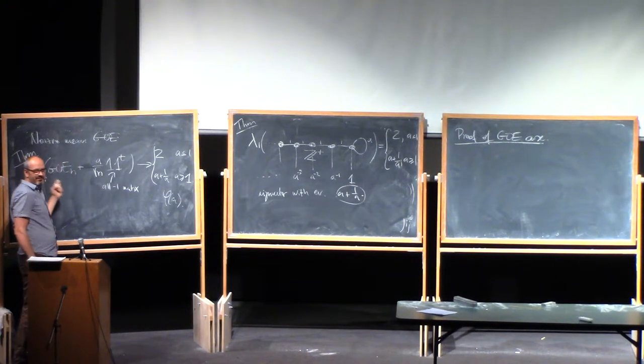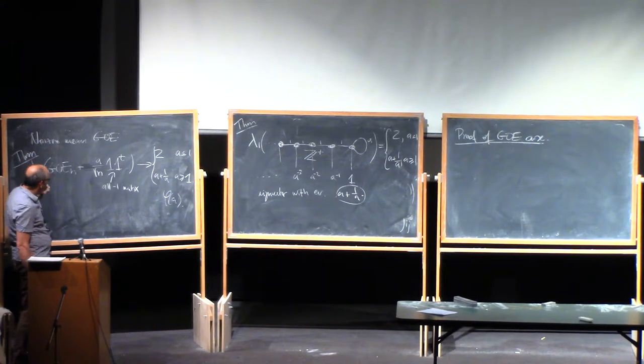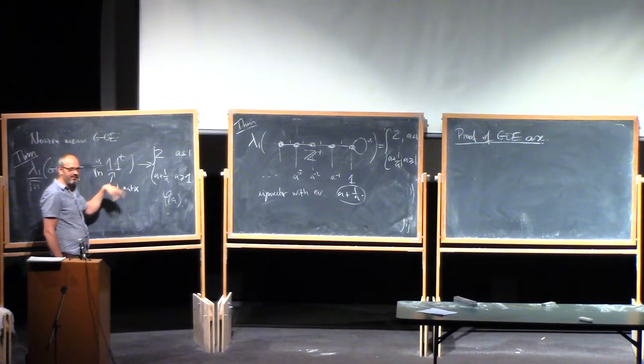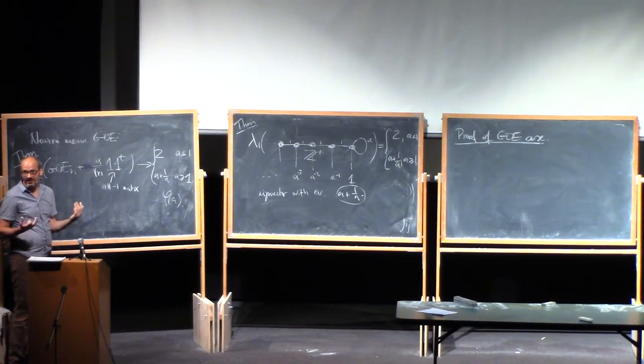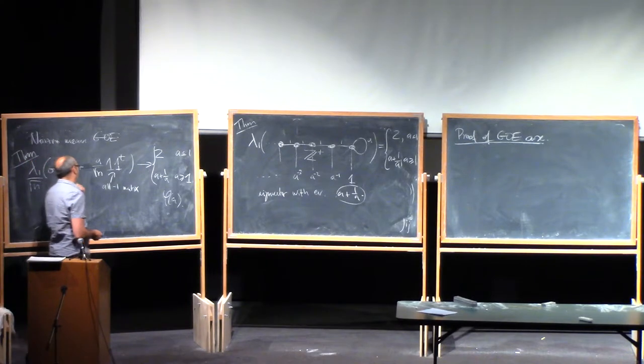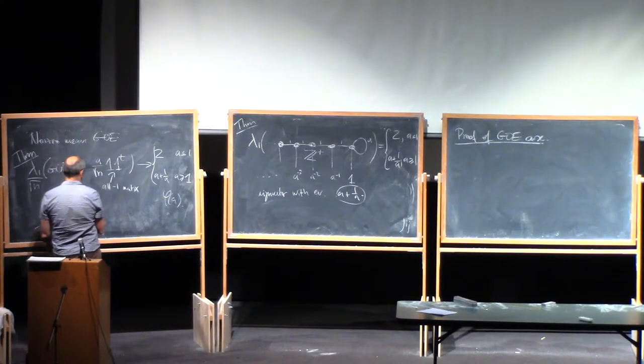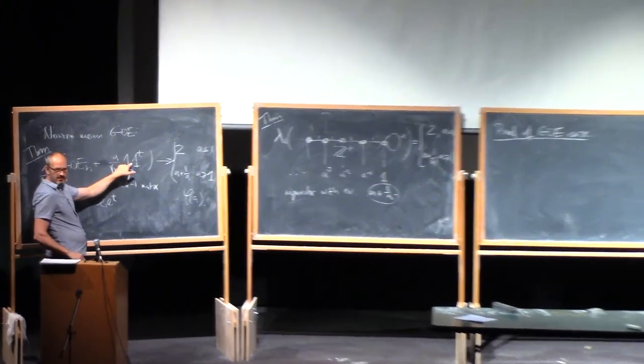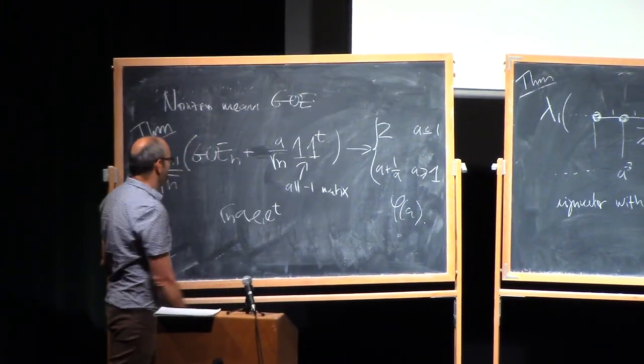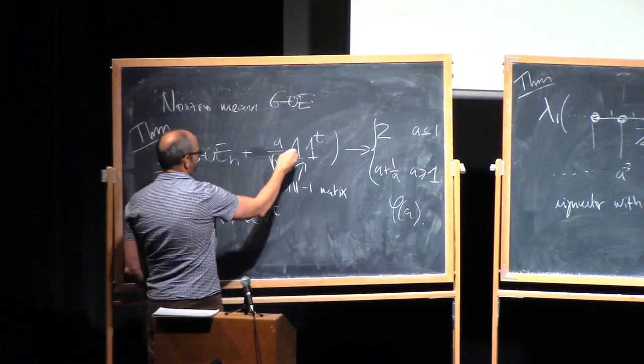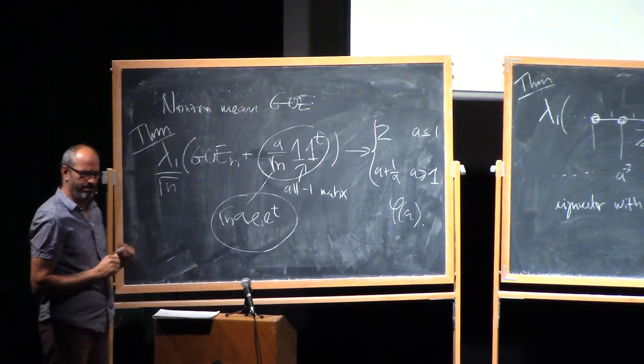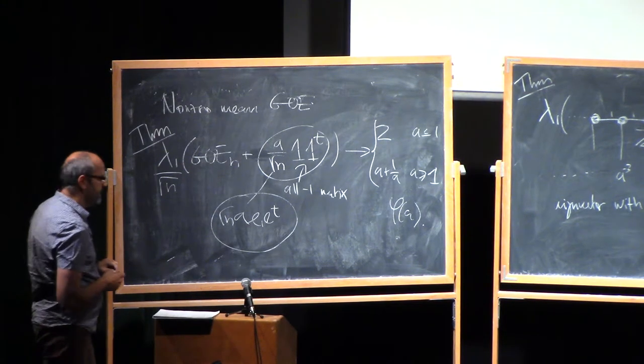So the first observation is that because this is an invariant ensemble, it doesn't matter what vector I write here. It's only the length of the vector that matters. Because you could just rotate. If I put another vector of the same length, I could just rotate the whole thing back to this thing without changing the eigenvalues. So instead of putting this vector, 1 1 transpose, I could just put E1 E1 transpose. But then the trade-off is that the length of this is 1, the length of that is root n. So I have to put square root of n A. So if I replace this term by this term, I get exactly the same distribution for the lambda 1. That's the first observation.